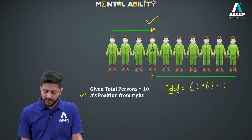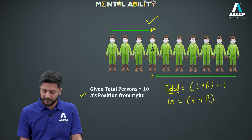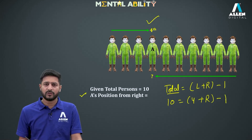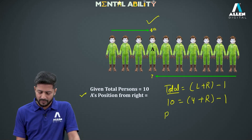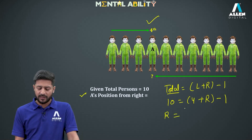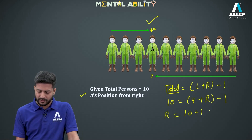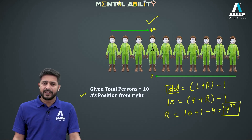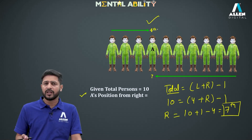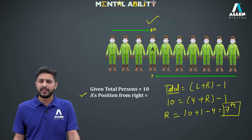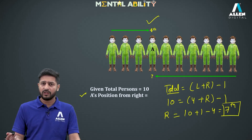The total number of persons is given as 10 and rank from the left is 4. Substituting into Total = L + R − 1: 10 = 4 + R − 1, so R = 10 + 1 − 4 = 7. The rank of person A from the right end is 7th, when the rank from the left is 4th and total persons in the line is 10.